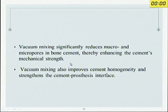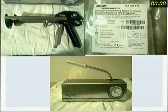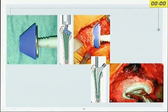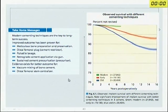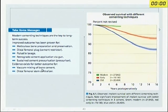Vacuum mixing offers a number of benefits: it allows a much more uniform mix, gives more working time, improves cement homogeneity, and decreases exposure to the monomer for people around you. The take-home messages are: modern cement techniques are key to long-term success. Meticulous bone preparation, distal femoral plug, pulsatile lavage, retrograde cement application using a gun, and sustained cement pressurization are all important. There is definite evidence base for vacuum mixing and distal femoral stem centralizer. Cementation has stood the test of 40 years of time — we should know the science of cementation well.